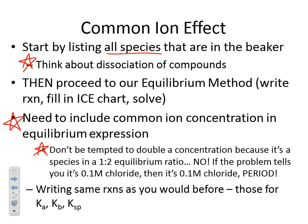Don't be tempted to double a concentration because of a stoichiometric ratio in the reaction. If the problem tells you that you have 0.1 molar chloride, but in the reaction you wrote 2 Cl-, that does not mean you have 0.2 molar chloride. The problem tells you — it literally tells you — you have 0.1 molar chloride. Yes, you need two of them in the balanced equation, but keep it as 0.1 molar. Don't randomly double it because you don't have it doubled — you have 0.1 molar chloride.